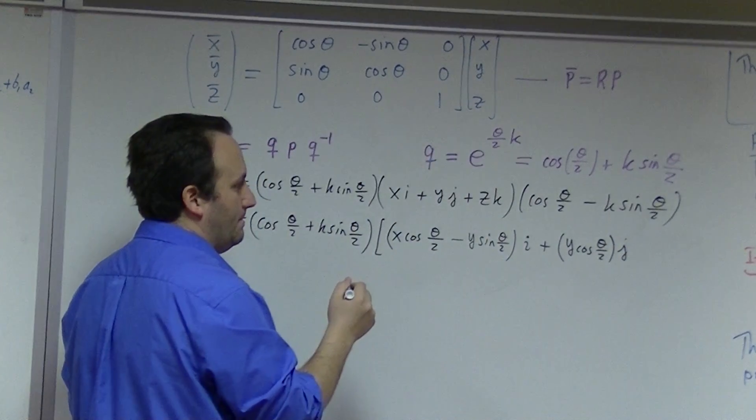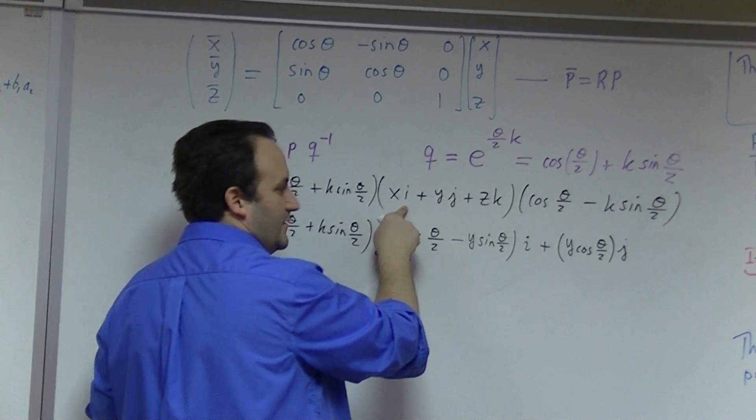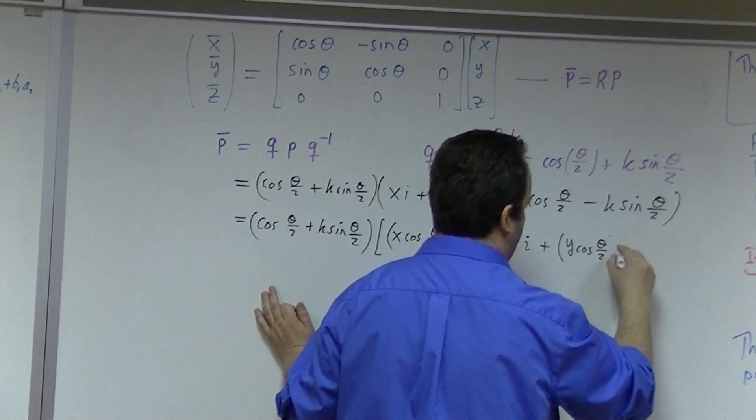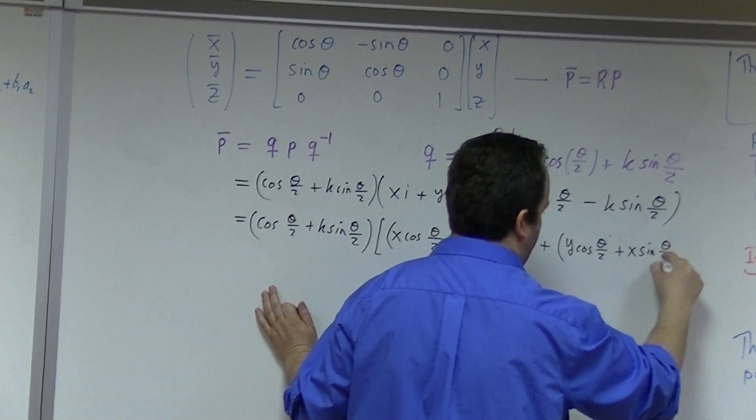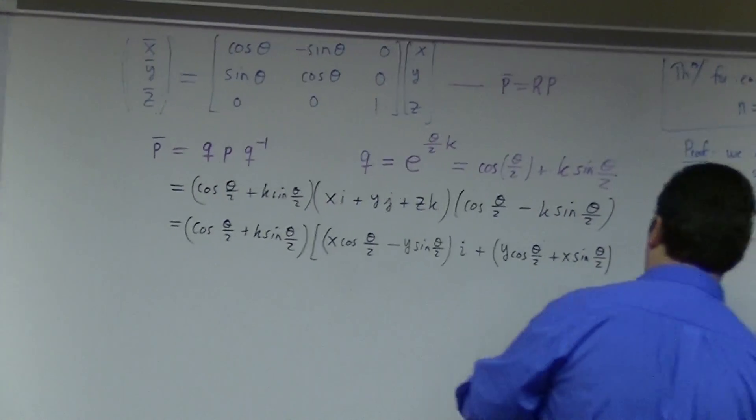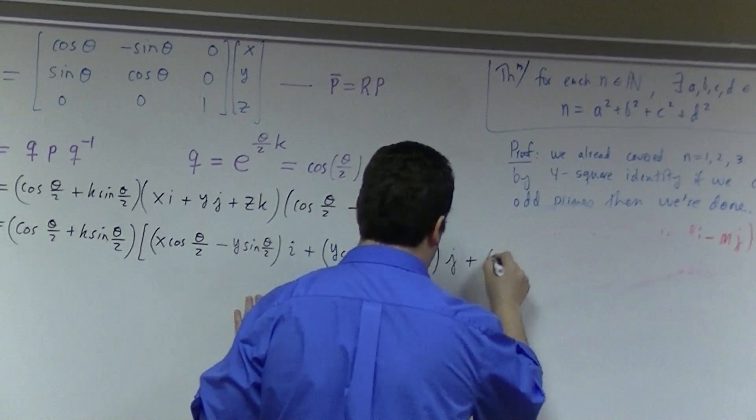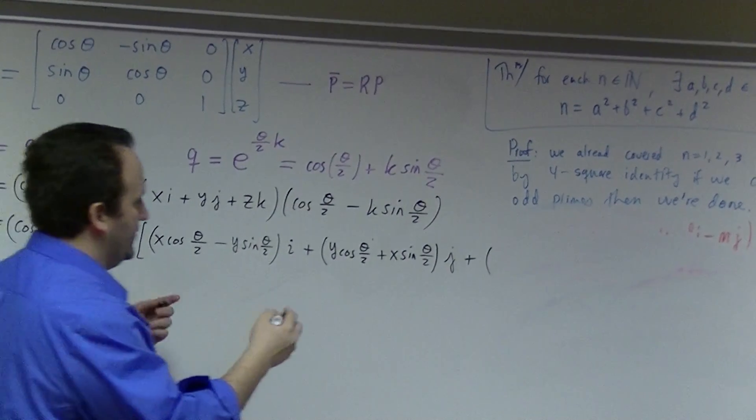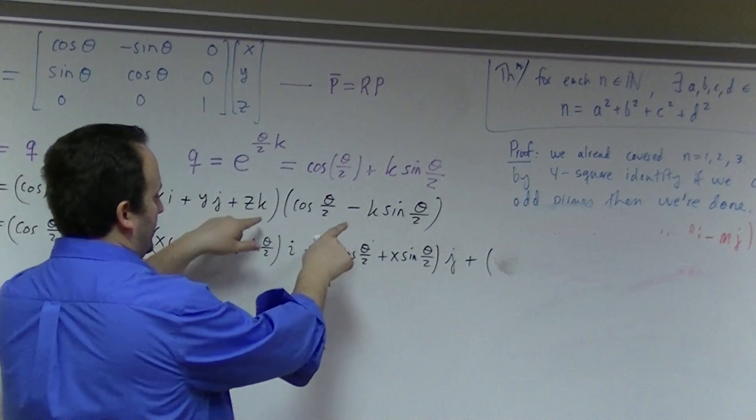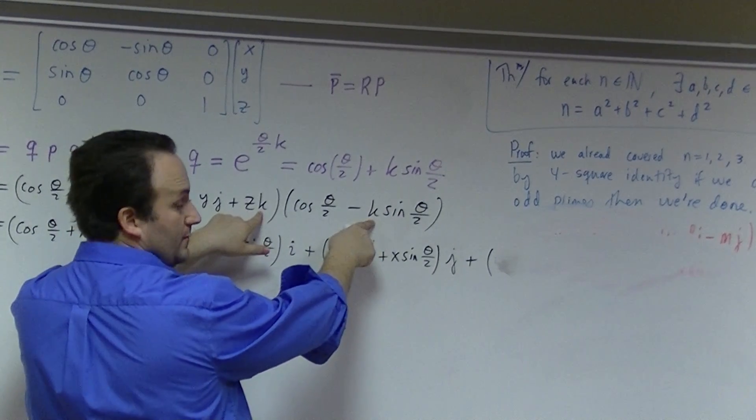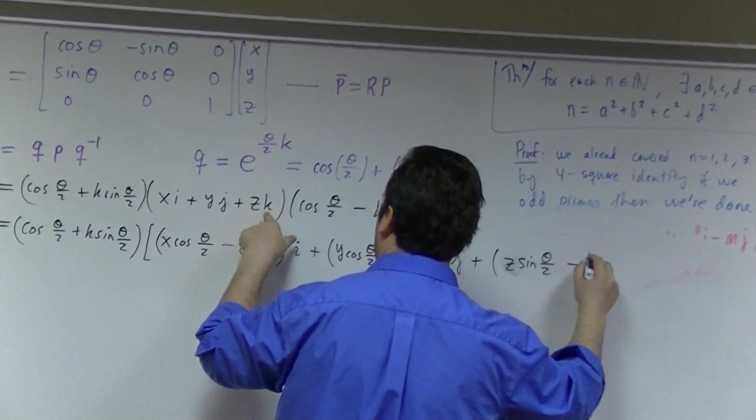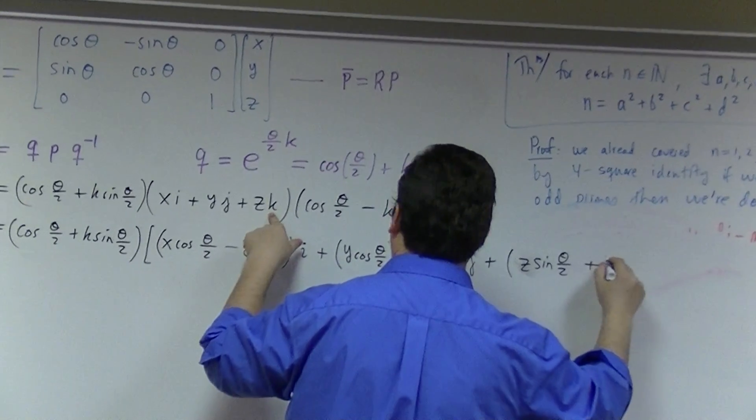How about k terms? Oh, I'm an idiot. Wait, I have something. Minus i k is j. So I should have plus x sine theta over 2. Plus x sine theta over 2, right? And then what else do I have here? I got k cosine theta over 2, right? Do I have anything else? Oh, k squared is minus 1, right? So I actually have plus z cosine theta over 2, right? Okay.